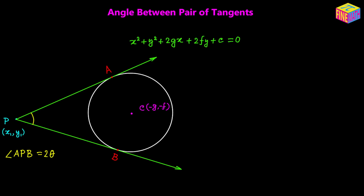In order to do the derivation, I have to do a little bit of construction. First, I am going to connect the center with the points of contact — CA and CB — each representing the radius of the circle. Next, I am going to join the external point with the center. From a previous theorem, we know that the angle between the radius and the tangent at the point of contact is always 90 degrees.